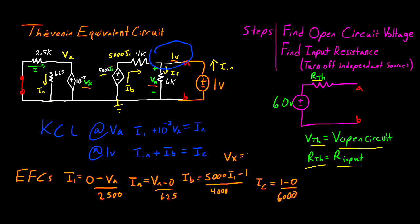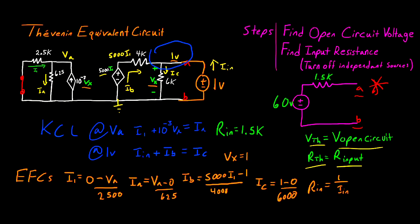We have two more equations to write. First, V_x = 1 volt, since we must reference it at our dependent current source. And the last equation is R_IN = 1 volt / I_N. We now have a solvable system of equations. Entering this into a system solver, the result is R_IN = 1.5K. Since R_IN equals our Thevenin resistance, this is the Thevenin model for the circuit — and at points A and B, this model will have the same behavior as the original circuit at points A and B, giving the same voltage and current for any connected resistance.